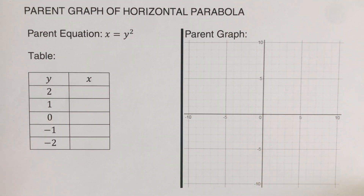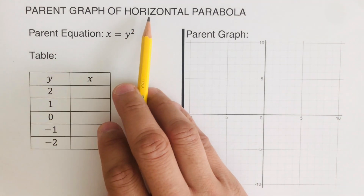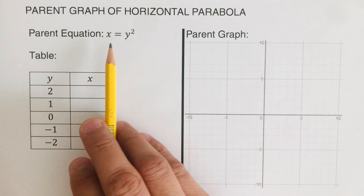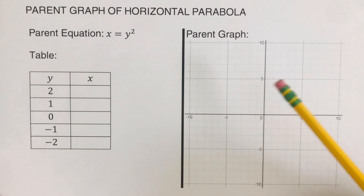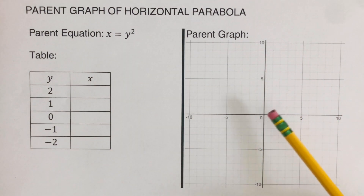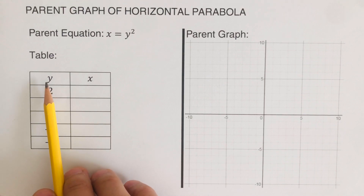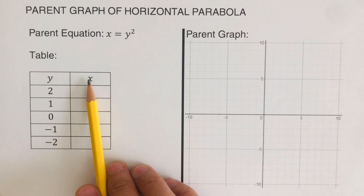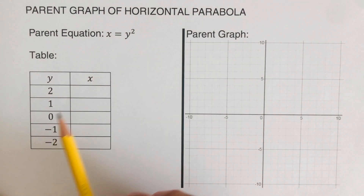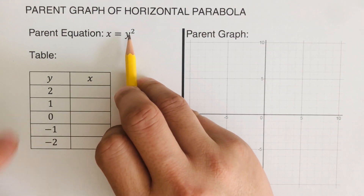Let's look at the parent graph of a horizontal parabola. The parent equation is x equals y squared — this is the sleeping parabola. We're going to complete this table to sketch the parent graph. Note that I've switched the x and y columns in the table, because to find x we square the y value.